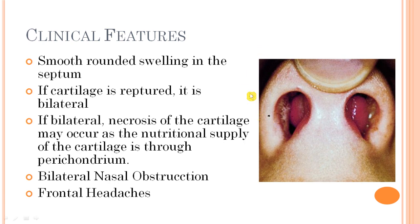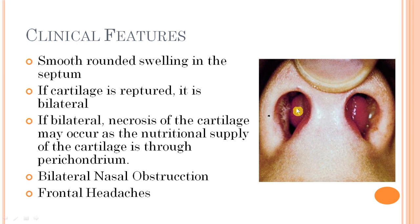Regarding clinical features, most patients will be young or sportsmen. On examination, you will see a smooth, rounded swelling in the septum. The swelling will be soft and fluctuant. If the cartilage between the two sides of the septum is ruptured, bleeding passes to the other side as well, leading to bilateral swelling.